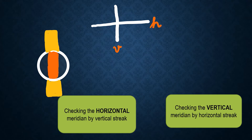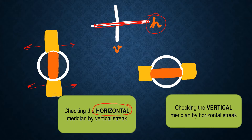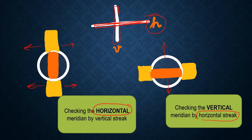From the basic retinoscopy video: when checking the horizontal meridian, we use a vertical streak and move the retinoscope horizontally. So a vertical streak tests the power along the horizontal meridian, and the value obtained at neutralization is depicted along the horizontal line of the power cross. Conversely, to measure the vertical meridian, we use a horizontal streak moved up and down. While measuring the horizontal meridian use a vertical streak, and while measuring the vertical meridian use a horizontal streak.